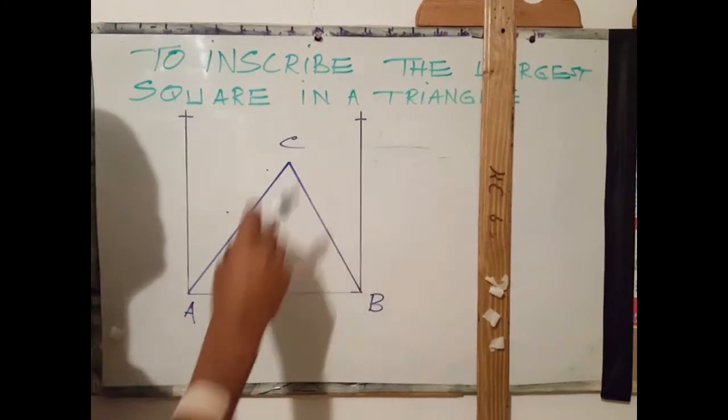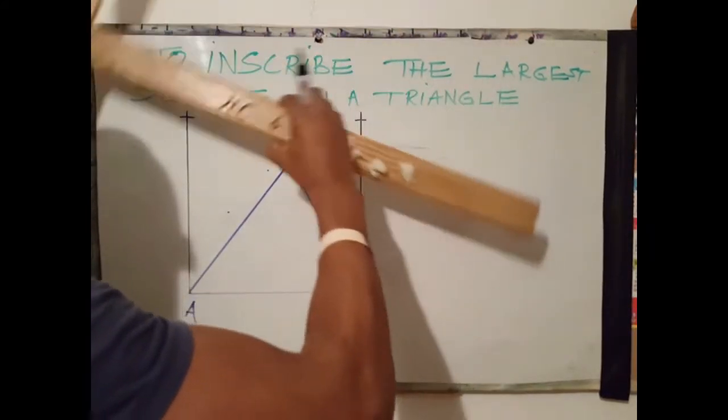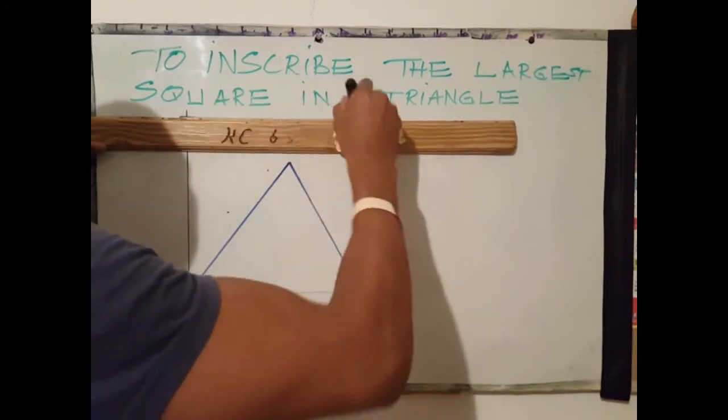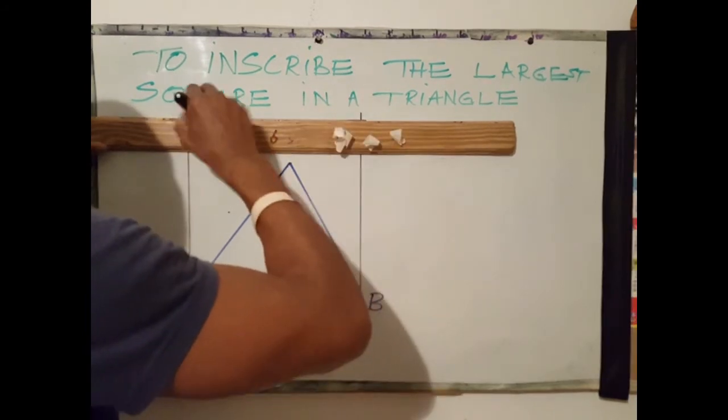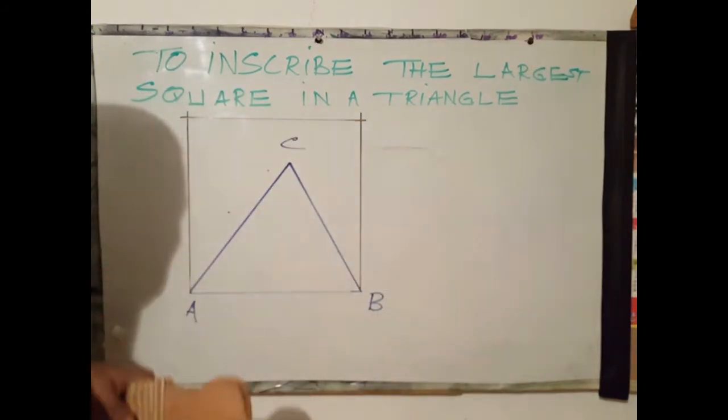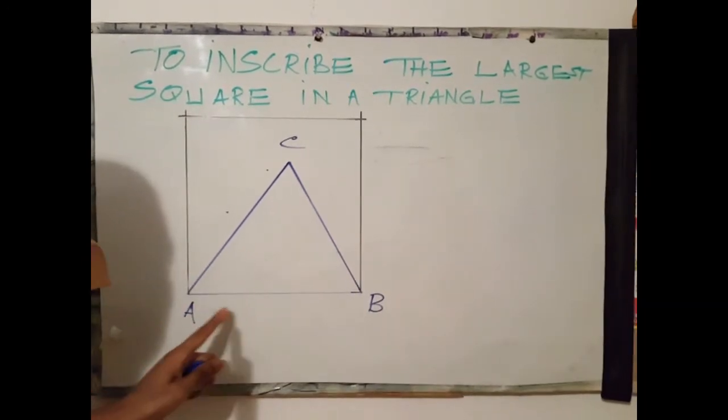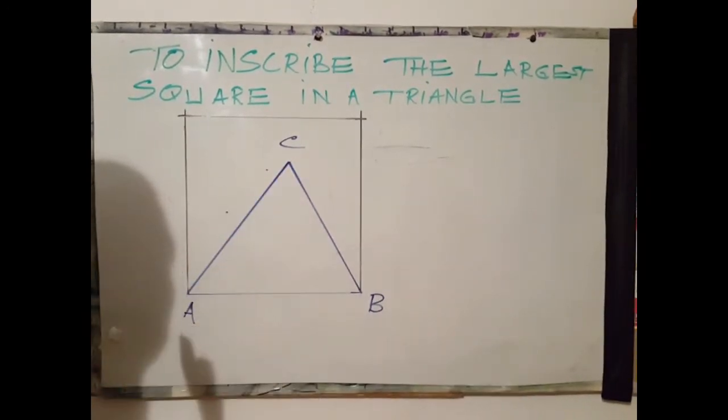Next step is to join those two points. Now we have our square, where each side is equal to the length of the base of the triangle.